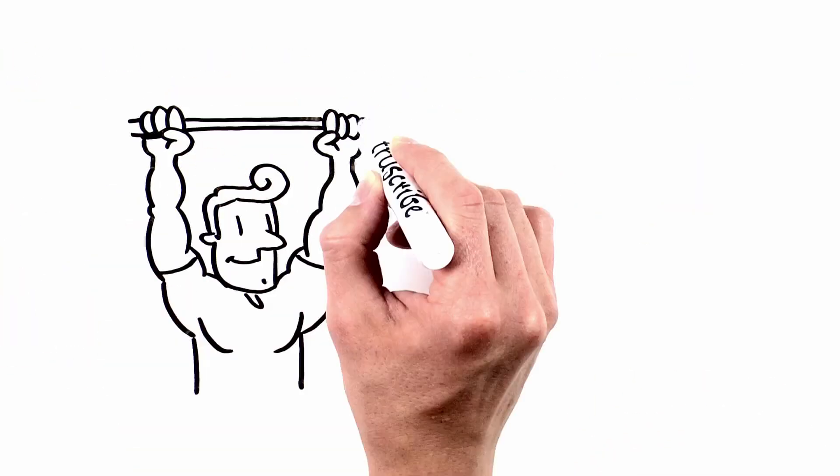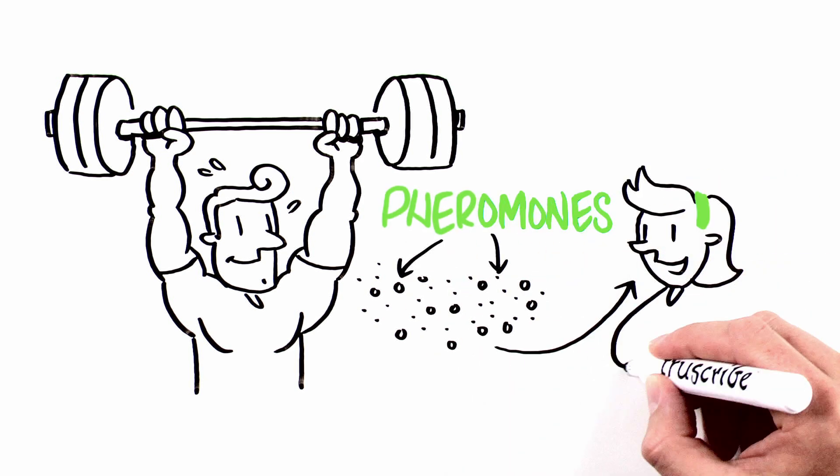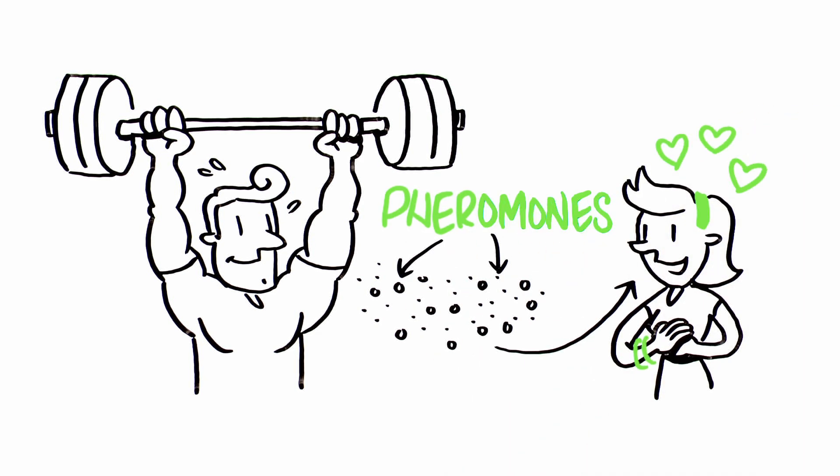The second reason why we are attracted to people has to do with pheromones. Pheromones are chemicals that are produced by our bodies and can be picked up through smell.